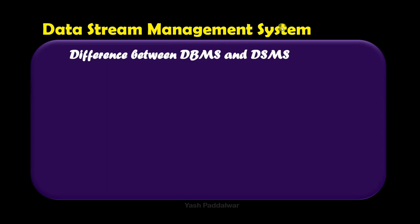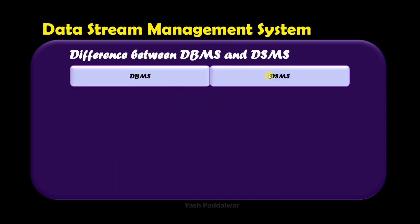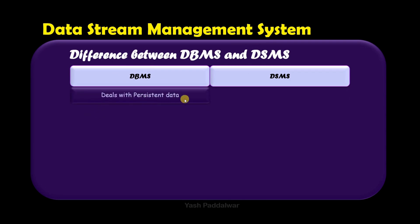First we'll have a look at the difference between DBMS and DSMS. DBMS stands for database management system, which is a normal database, and DSMS is the data stream management system which we are going to look at in detail. The first difference is that DBMS deals with persistent data, which is static data that is not going to increase continuously with time. Whereas DSMS deals with streaming data which increases continuously with time and has an infinite rate of growth.